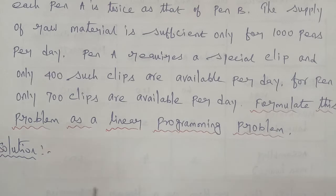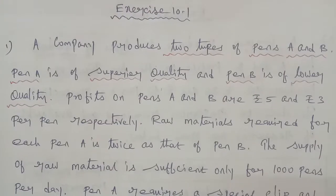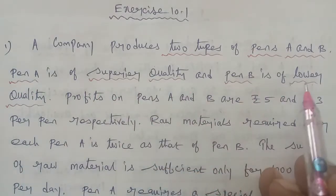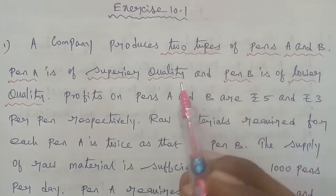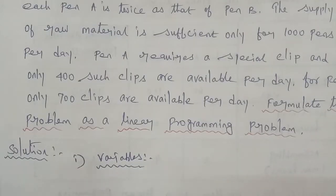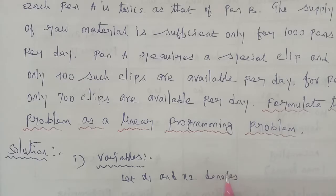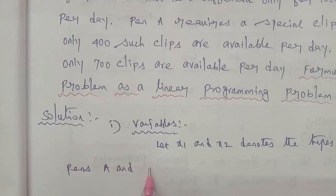Step number 1 is variables. From the given question, the company produces two types of pen A and B. Pen A is superior quality and pen B is lower quality. So let X1 and X2 denote the number of pens of type A and B respectively.